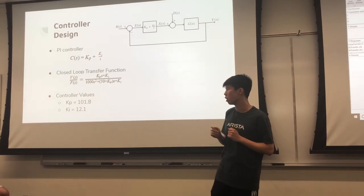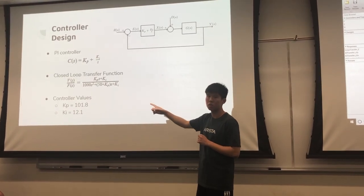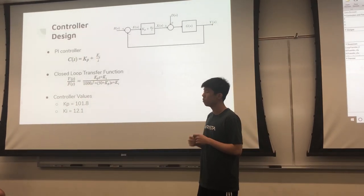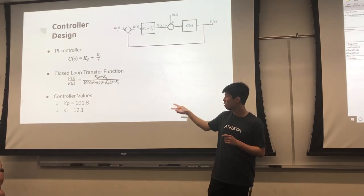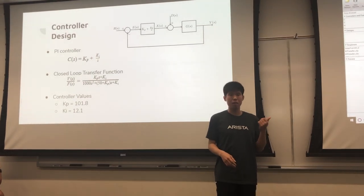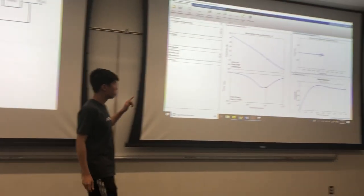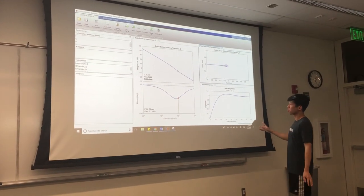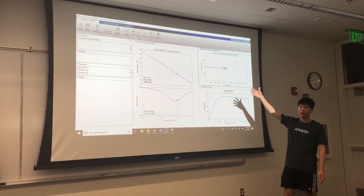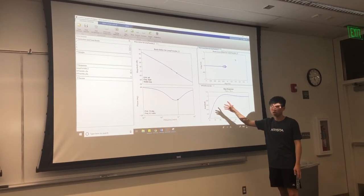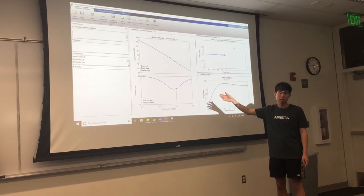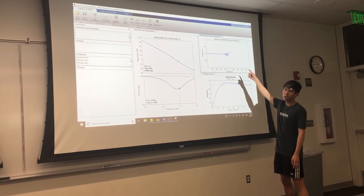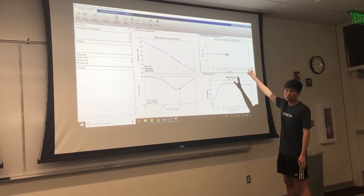By doing the hand calculations, we got the kp value to be 101.8 and the ki value to be 12.1. Another way to verify these controller values is using MATLAB's ZISO tool function. We first add in the first-order transfer function, which is 1 over 1000s plus 50. After that, we can add pole and zero locations in this root locus editor.